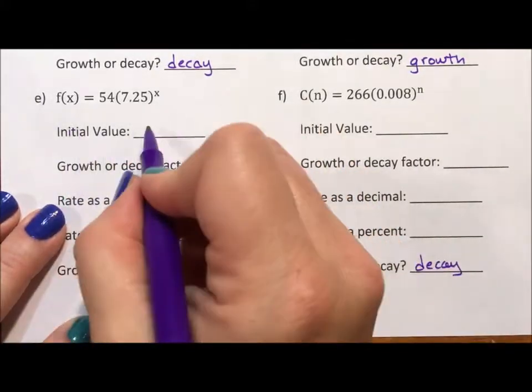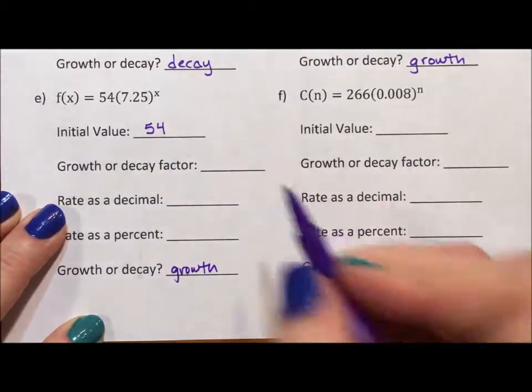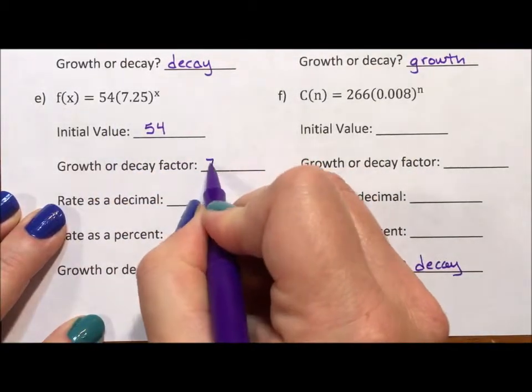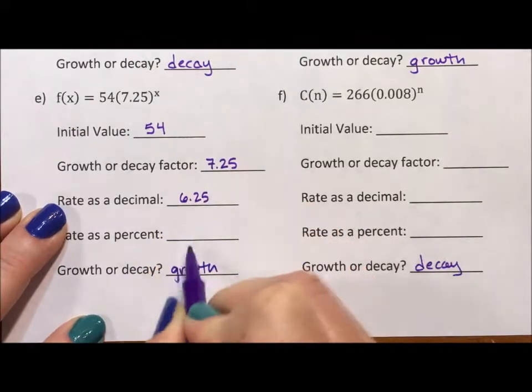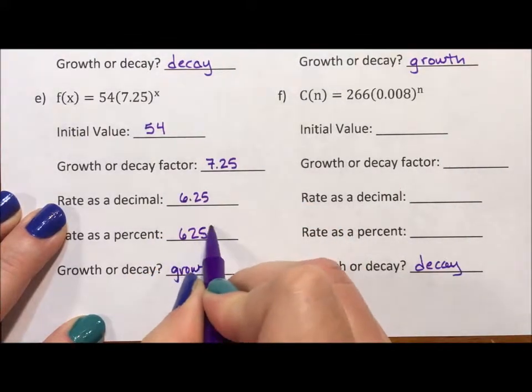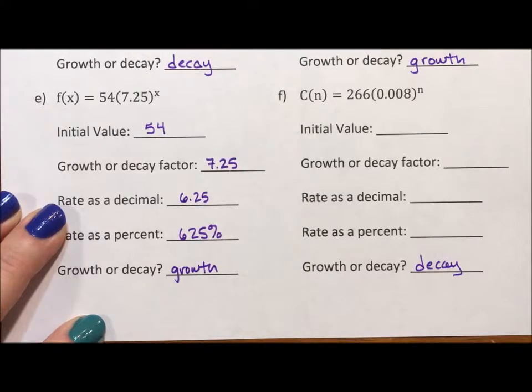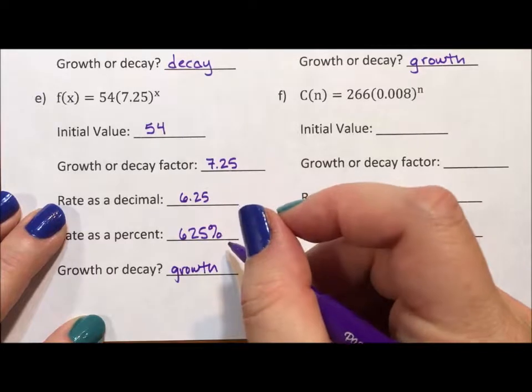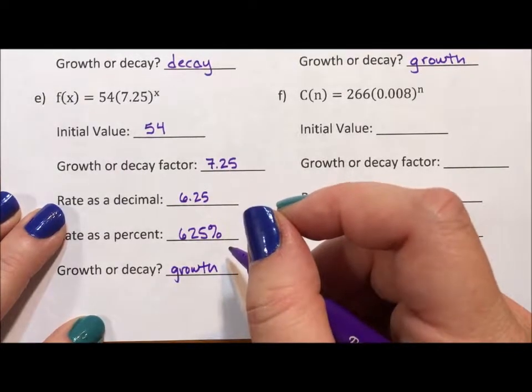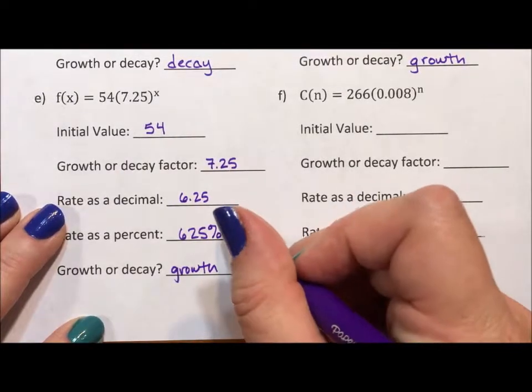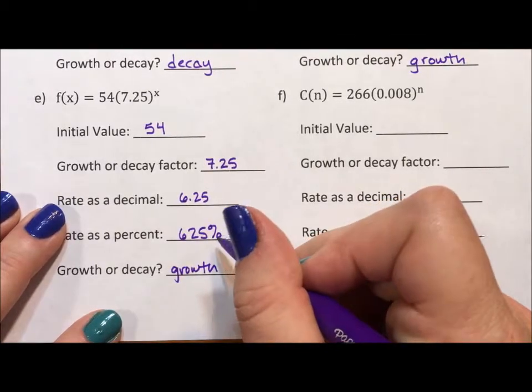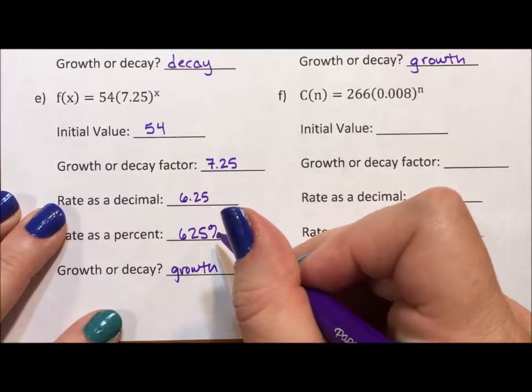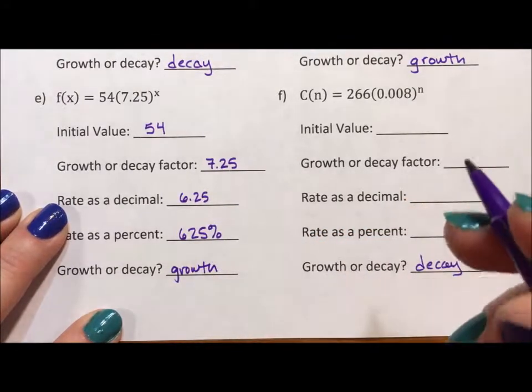All right, here your initial value is 54 because it's the number without the exponent. The factor is 7.25. Subtract 1. The rate as a decimal is 6.25, which is 625%. You can have percents over 100. You can't give more than 100%, but you know, a 200% growth just means something is doubling in number. When you're talking about growth, you can have any percentage. I've seen situations where your growth percentage was over 1,000%. That just means you have a serious growth going on.